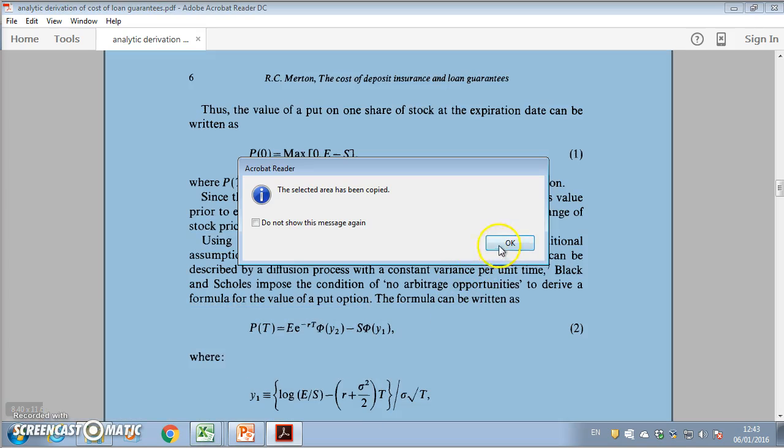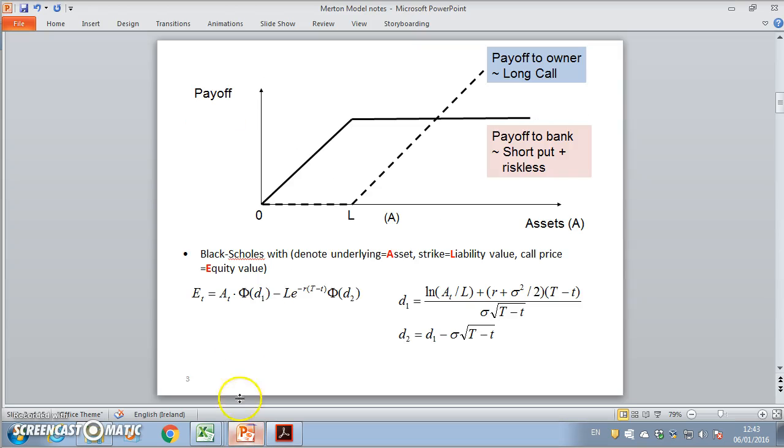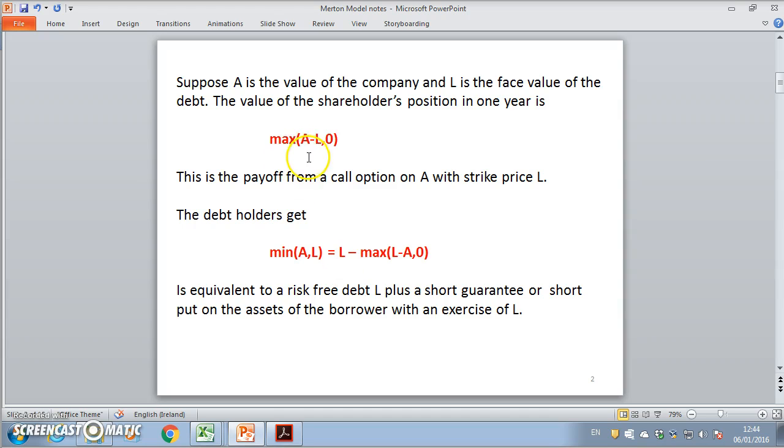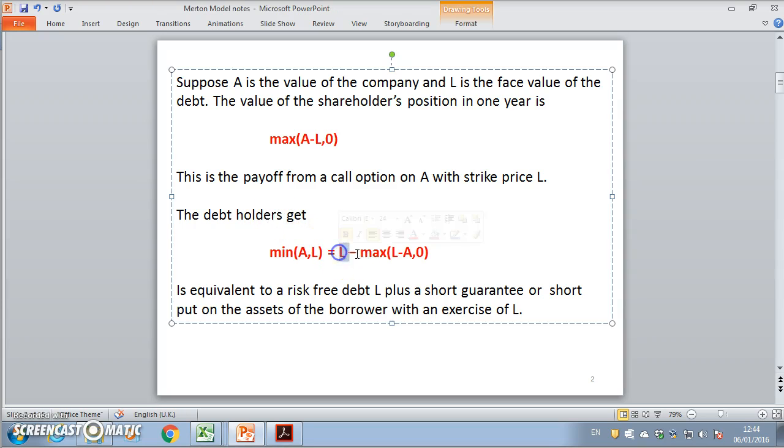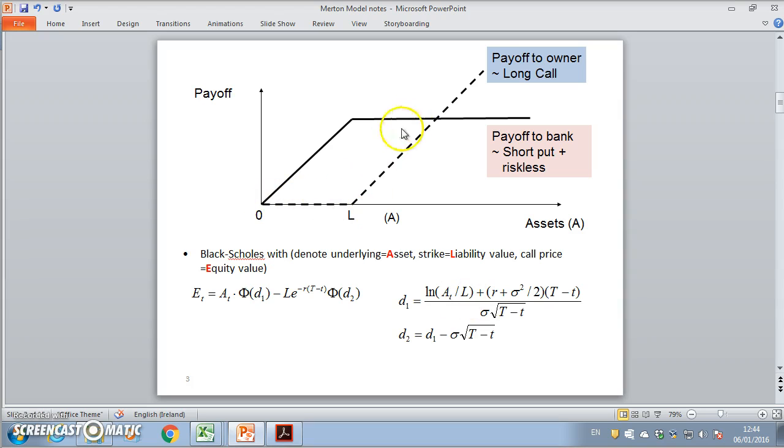We could consider this by going back to the analysis we had previously. In fact, going back to Merton 1974, he makes very clear that the value of a shareholder's position could be represented as a call option: the maximum of an asset minus its liability, or the maximum of the assets in a company minus the debts of the company. From the debt holder's position, they have a risk-free asset but they are short a put option.